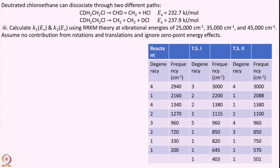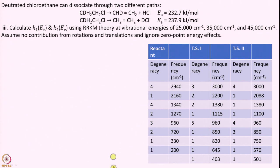Now let us actually calculate these rate constants using RRKM theory. Your theoretician friend gives you frequencies for the reactant with degeneracies. First check: add all degeneracies to confirm they sum to 18. Counting: 4+1+4+2+... = 18. Good — your theoretician friend is making sense. For the two transition states he gives separate frequency sets. Adding degeneracies for each transition state gives 17. Never blindly trust your theoretician friend — always verify the numbers add up.